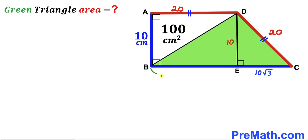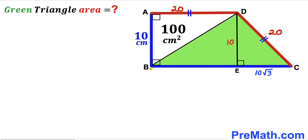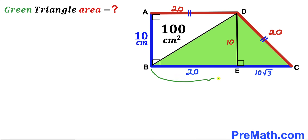We observe that BE equals base AD, which is 20 centimeters. Therefore the full base BC equals BE plus EC, which is 20 plus 10√3 centimeters.